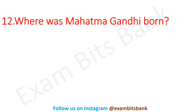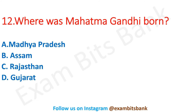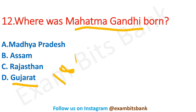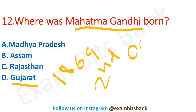Next question: Where was Mahatma Gandhi born? Options are Madhya Pradesh, Assam, Rajasthan, or Gujarat. As most of us know, Mahatma Gandhi was born in Gujarat — option D is correct. He was born on 2nd October 1869. The full name of Mahatma Gandhi ji was Mohandas Karamchand Gandhi.